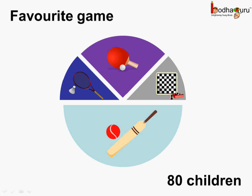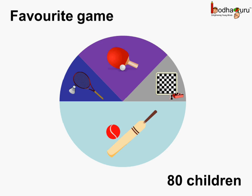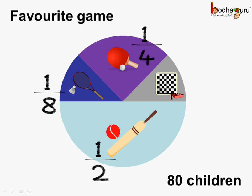The circle was divided into various parts. Aman also wrote the fraction equal to the number of children liking a particular game. In case of cricket, one by two — or half — of the total children like to play cricket. One eighth of the total children like to play badminton. One fourth of the total children played table tennis. And one eighth of the total children played chess. So the fraction tells how many amongst the children liked each game.